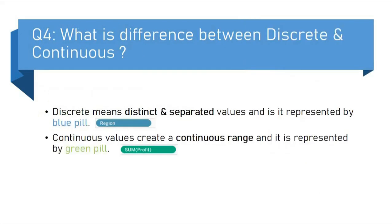The next question is: what is the difference between discrete and continuous? Many people get confused between discrete, continuous, and measures and dimensions — don't confuse them, these are separate terms. Discrete means distinct and separated values, and it is represented by a blue field as you can see here. Continuous values create a continuous range and are represented by green color as you can see here.